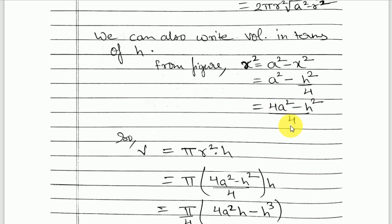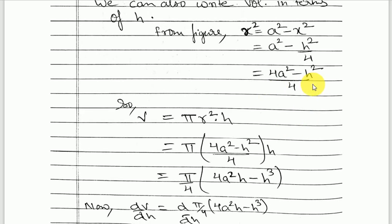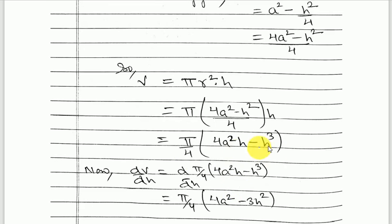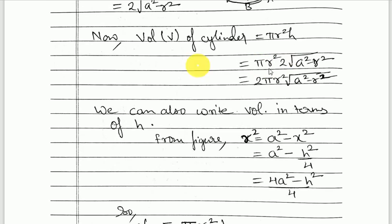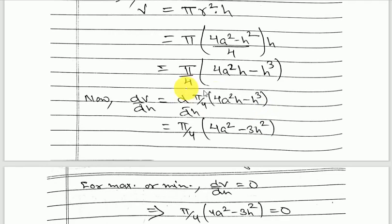So v equals πr²h, and replacing r² with (4a² − h²)/4, we get v = π(4a² − h²)h/4. Now differentiating is easy because there is no square root involved. Had we used the expression in r, the differentiation would have been more complicated due to the square root in the denominator.